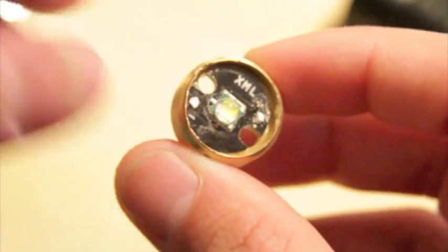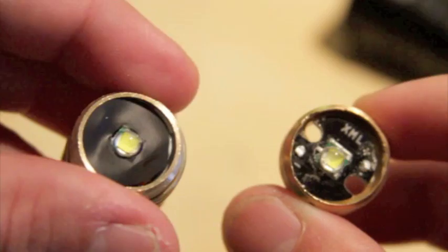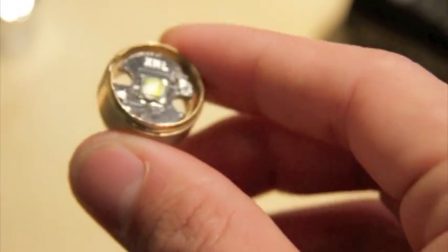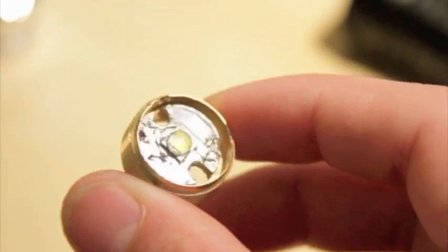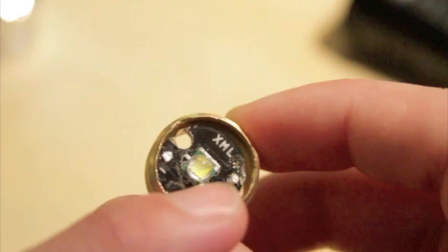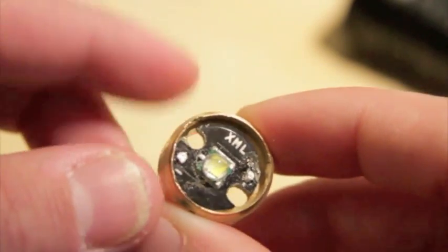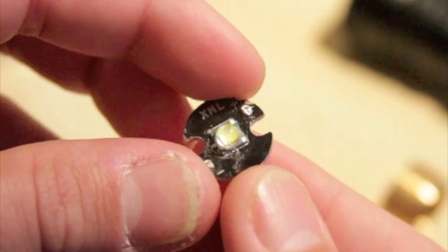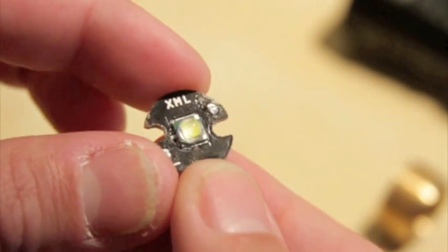You simply remove the black paper cover there, and then you will have two wires on here, the negative and the positive. Once you unsolder that, your LED should look like this. You want to put that to the side.